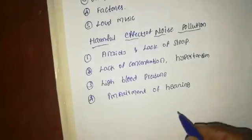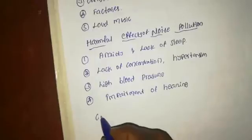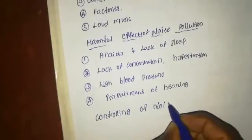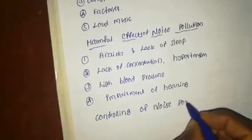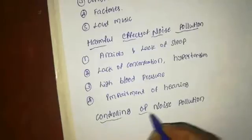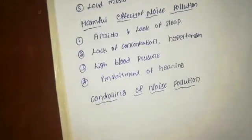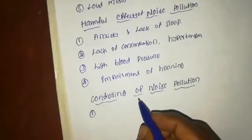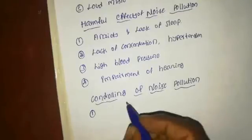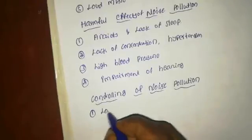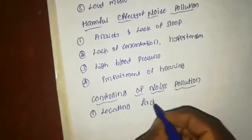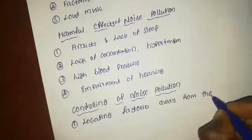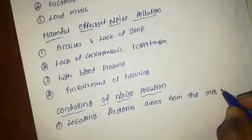Next, we move on to controlling noise pollution — what are the steps taken to control it? The first one is locating factories and industrial units away from residential areas.